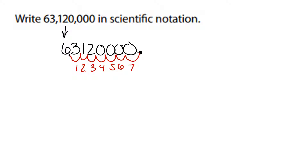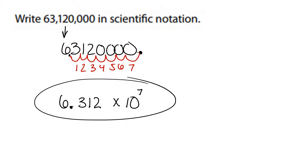When we come to writing our answer, we only have to write the numbers 6.312. We do not need to write zeros — zeros are not important. Then we write times 10, and it will always be times 10. And then we write our exponent, 7. 63,120,000 is a big number, so that is a positive exponent. We move the decimal seven times — that's where the seven came from. And that's our final answer.